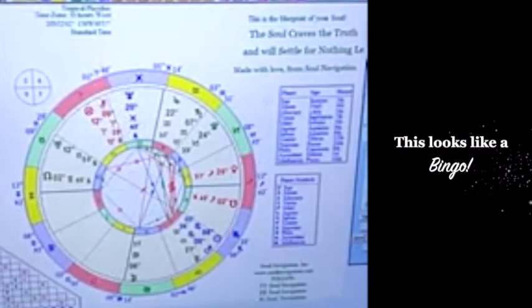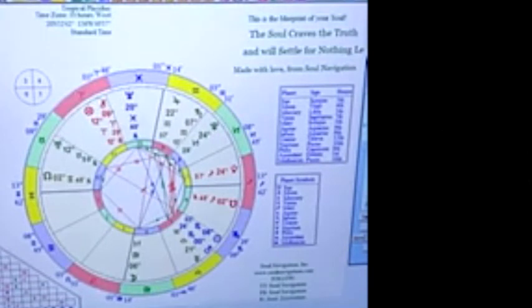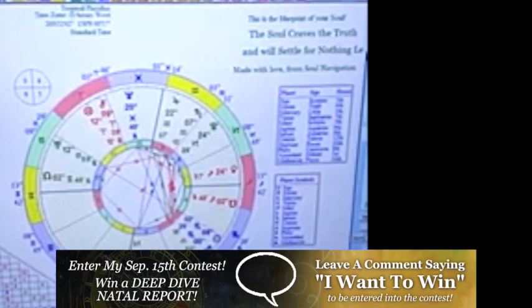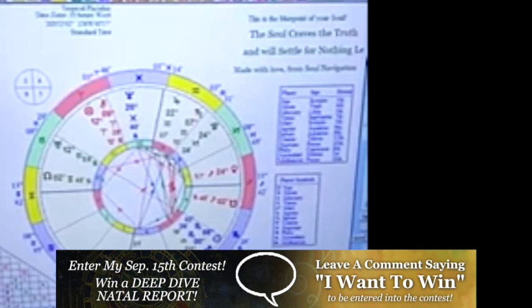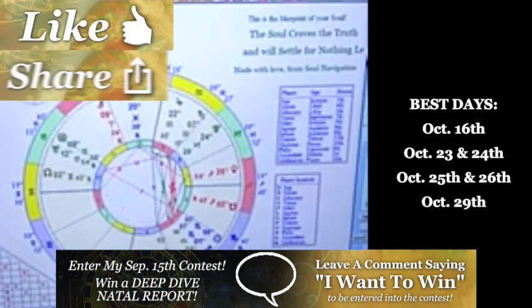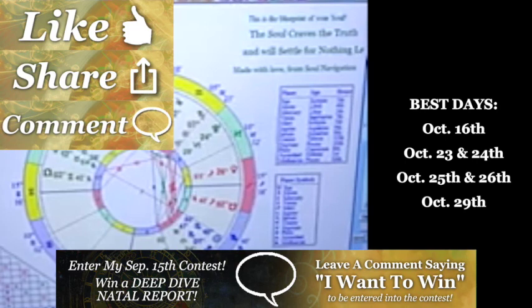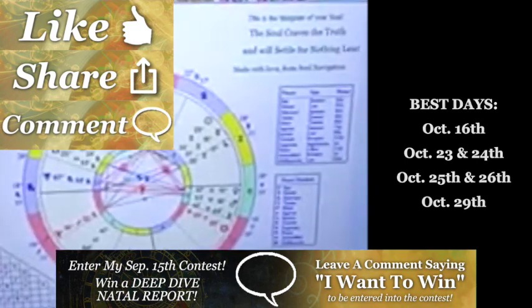October 30th, Virgo moon. I don't know. That's gonna be a square to the ascendant and a square to Venus, so I don't know. I don't want to pick that. Okay, so those are my favorite days in October. I hope that helps.